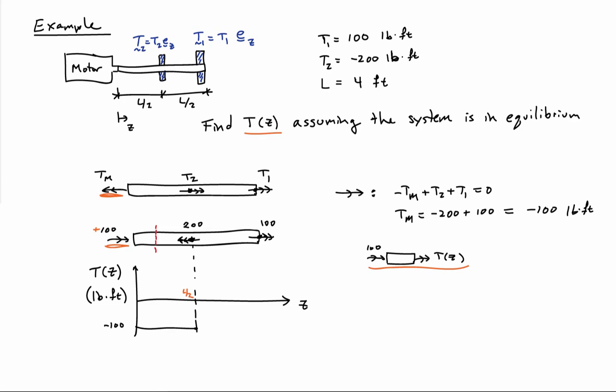And to complete the diagram, I can make a section cut to the right of the second torque, and then I get this free body diagram shown here. I can sum the moments about the Z-axis, and I find out that T of Z in this section is equal to 100.